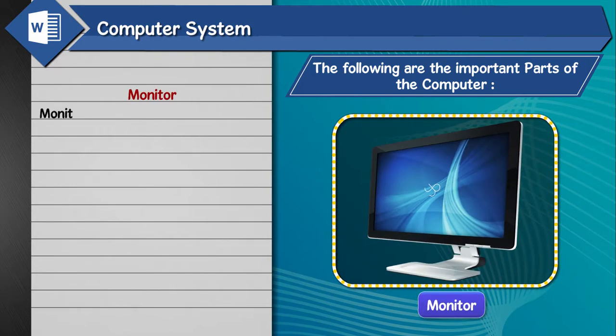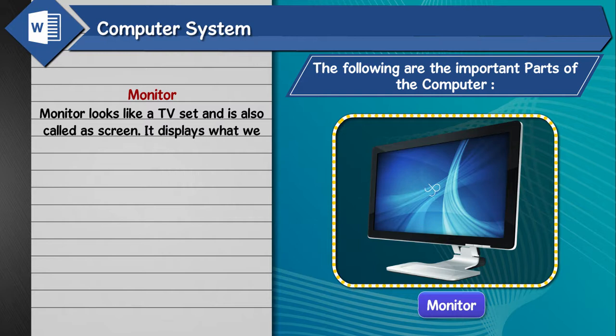Monitor. The monitor looks like a TV set and is also called a screen. It displays what we type on the keyboard and thus is an output device.